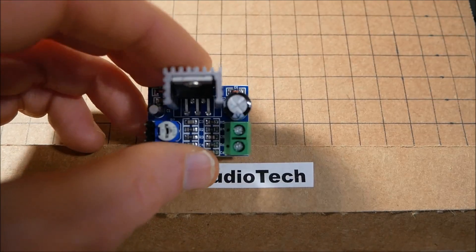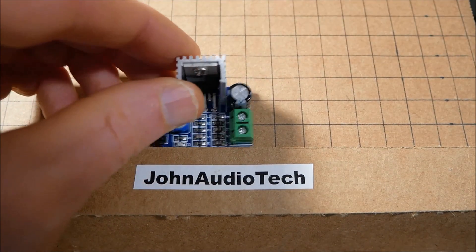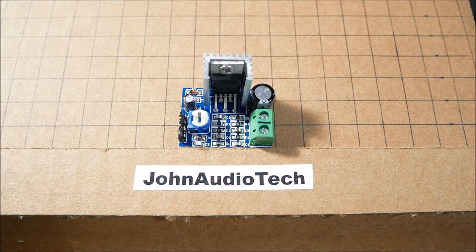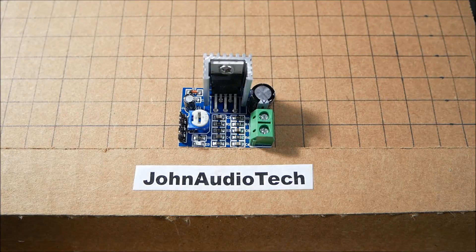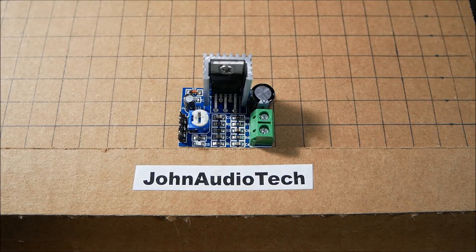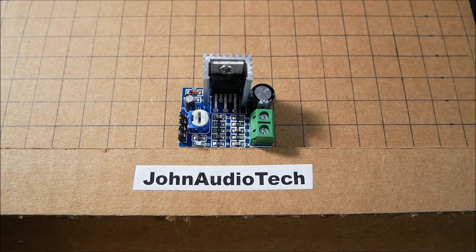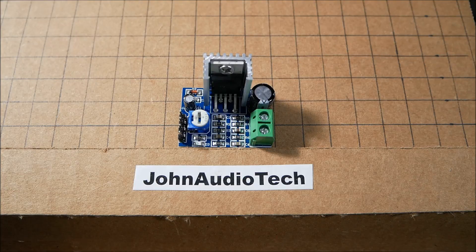Look at that heat sink, very very tiny. It's not going to dissipate a lot of power. As a matter of fact, they say it's rated from 6 to 12 volts.